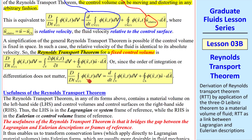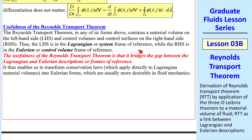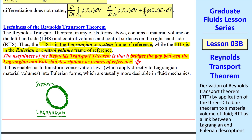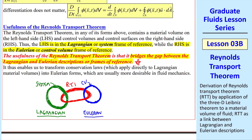Now let's talk about the usefulness of the Reynolds Transport Theorem. In any of its forms, it contains a material volume on the left-hand side and control volumes and control surfaces on the right-hand side. Thus, the left-hand side is the Lagrangian or system frame of reference, and the right-hand side is in the Eulerian or control volume frame of reference. The Reynolds Transport Theorem bridges the gap between Lagrangian and Eulerian descriptions. I like to think of it as a link between the system or Lagrangian frame and the control volume or Eulerian frame of reference.